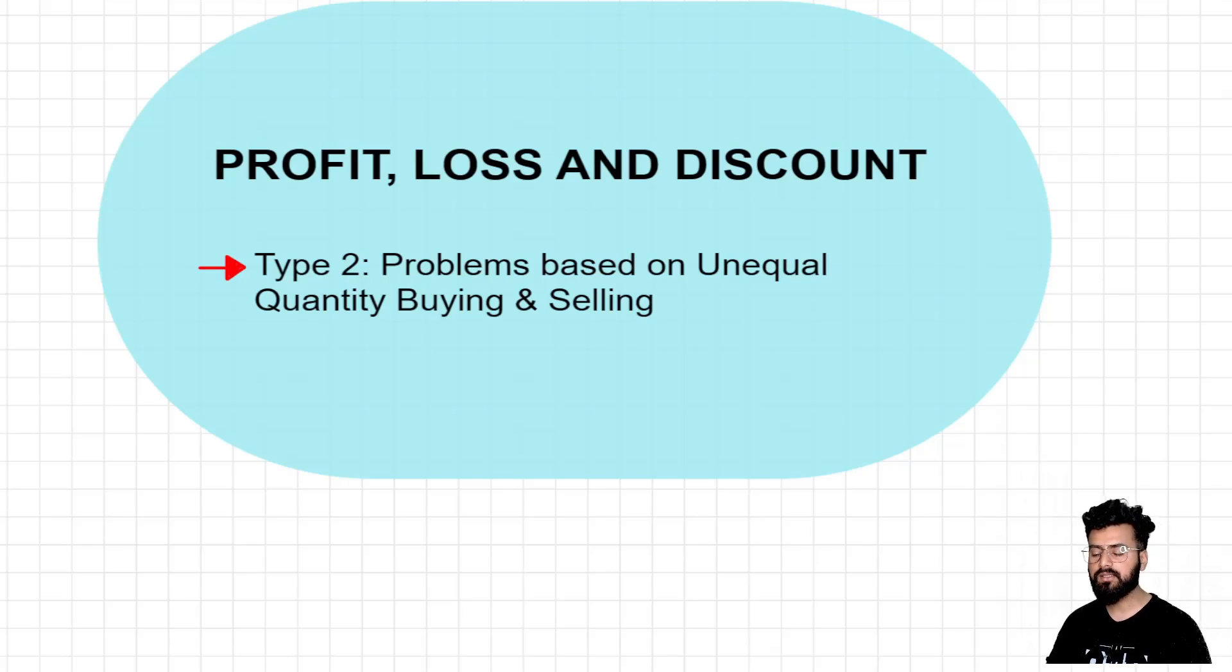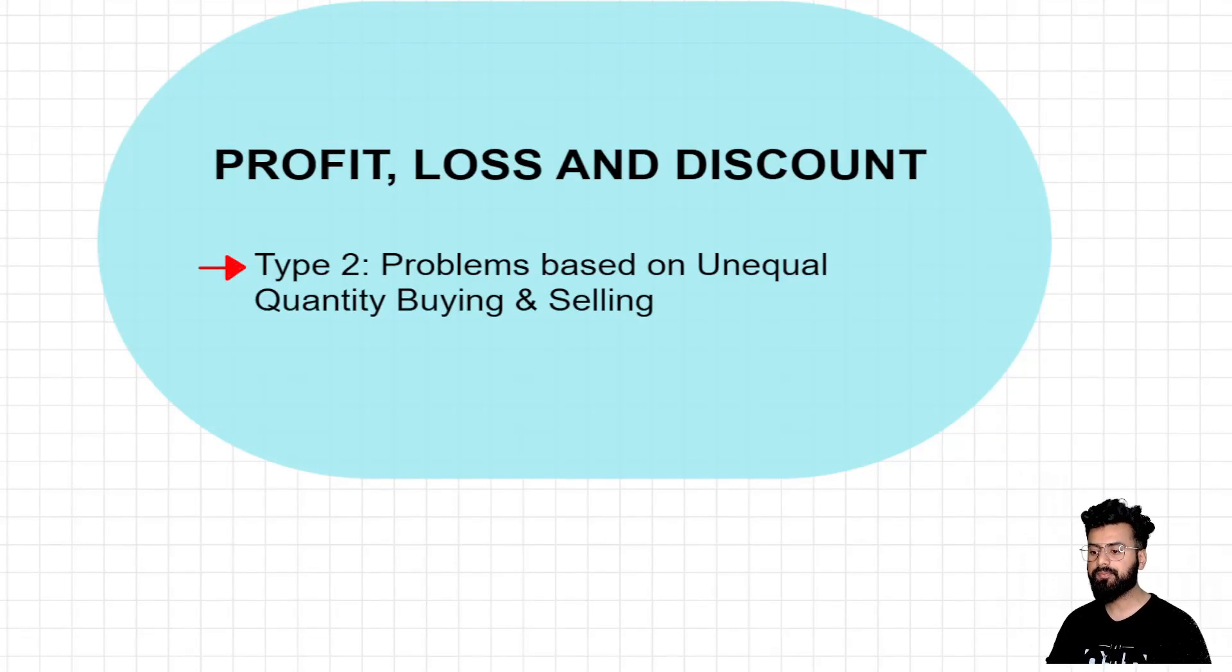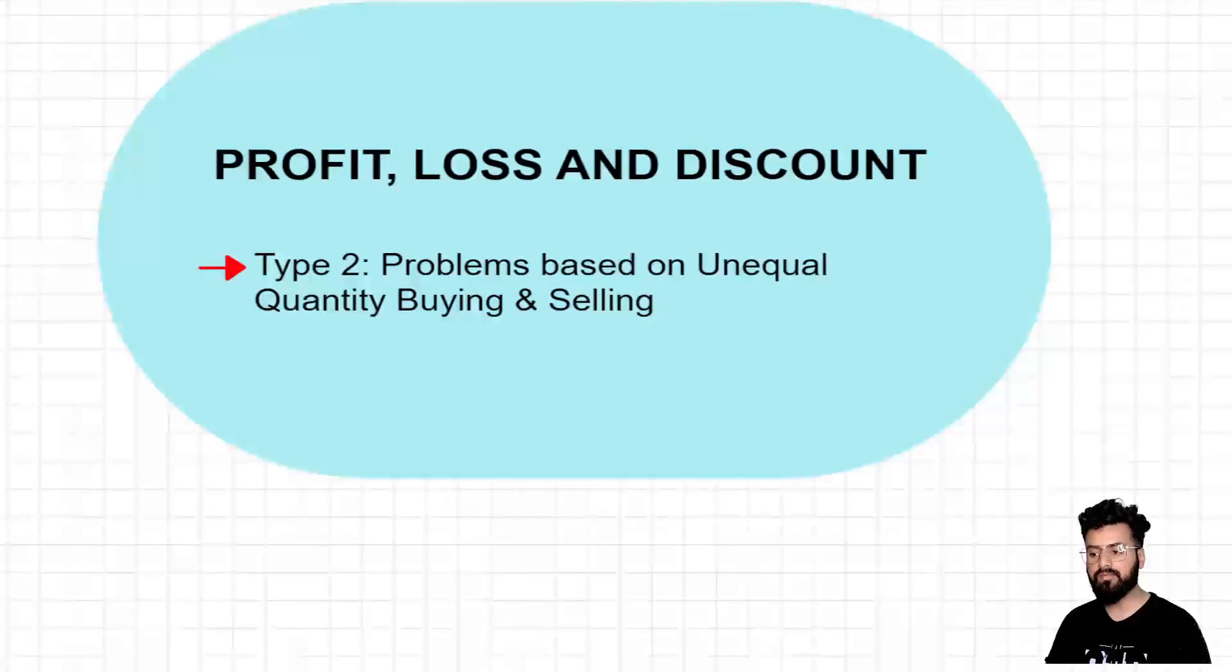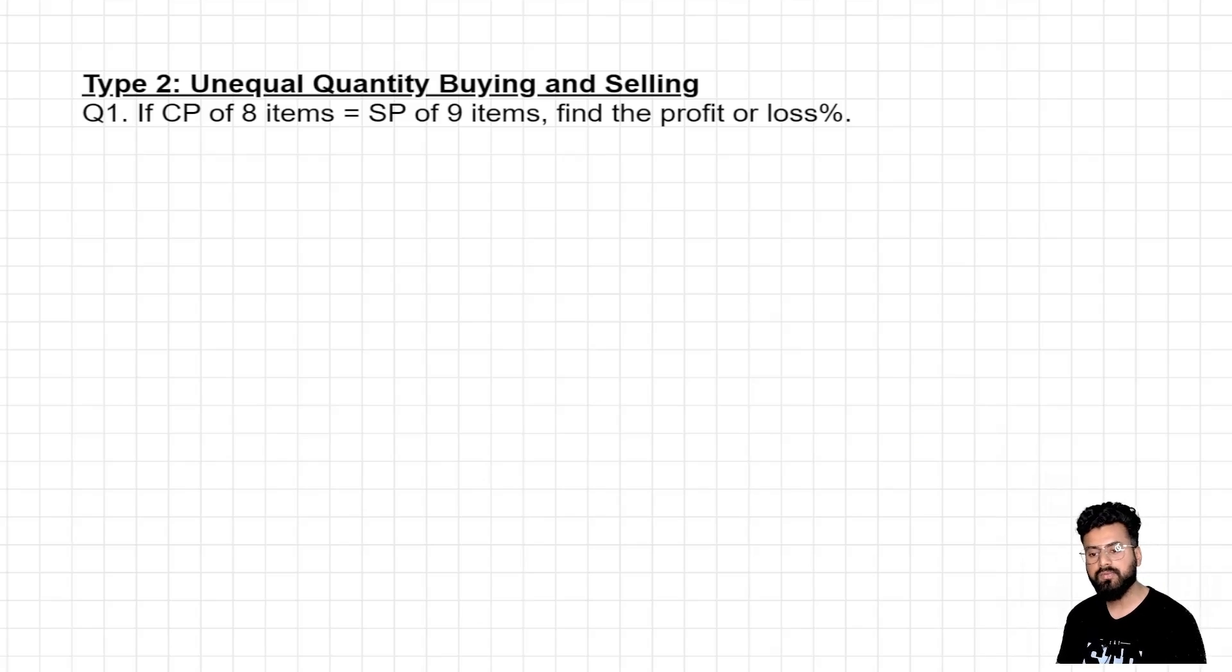Hello everyone, I welcome you all in the third lecture on topic profit, loss and discount. If you remember in the last lecture I had told you that we would start with all the important types of problems which can be asked from this very topic and also I had completed one type as well. So today again I'll pick one more type where the agenda would be to show all the variation of questions which can be framed from it. So let us start. So now it's time to start with type 2 where you'll find problems based on unequal quantity buying and selling.